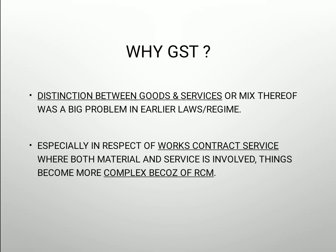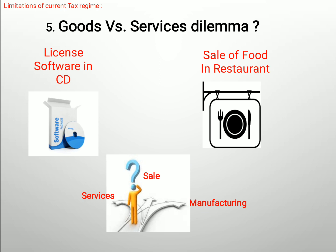Now, goods versus services dilemma — what is a dilemma? It's a kind of puzzle, a problem or situation in which a difficult choice has to be made between two or more alternatives. For example, consider licensed software and sale of food in a restaurant.